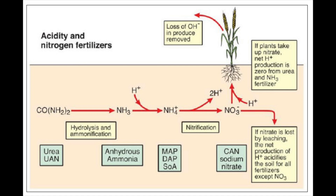As you can see in the diagram, urea and ammonium fertilizers are converted to nitrate. In this process, a hydrogen atom is gained — meaning it is positively charged — so soil acidity will increase if this nitrate is leached out from the soil or potting media. If the nitrate is absorbed by the plant, this additional hydrogen ion is consumed, so the net pH will not drop.